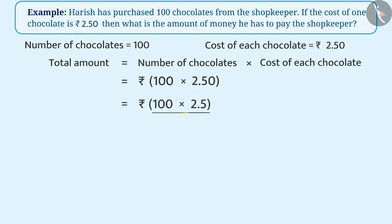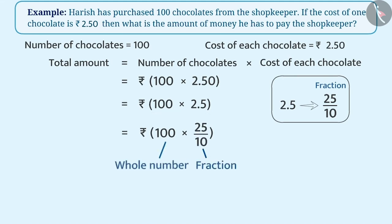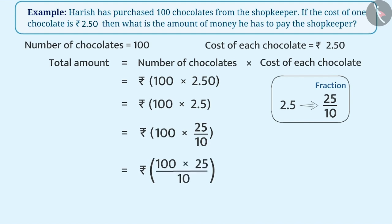We need to find the answer to this. 2.5 can be written in fraction form as 25 by 10. So we can write the multiplication as 100 multiplied by 25 by 10. Here, a fraction is getting multiplied with a whole number. In order to obtain the answer, we will multiply the whole number with the numerator of the fraction and then divide the result with the denominator. Therefore, the answer obtained is 250.